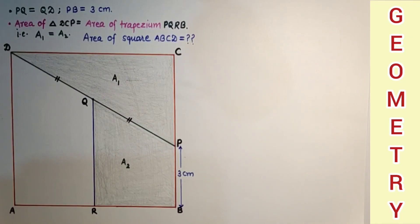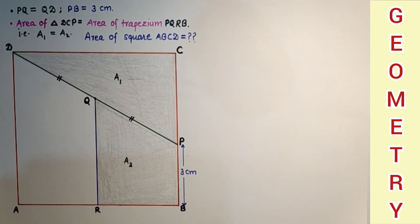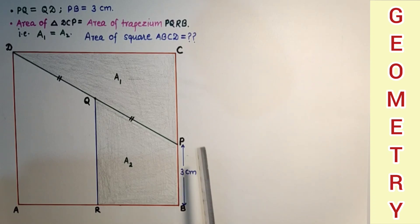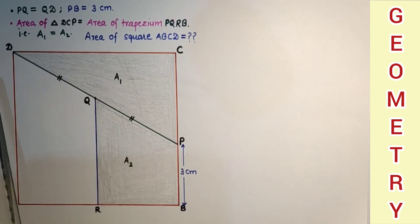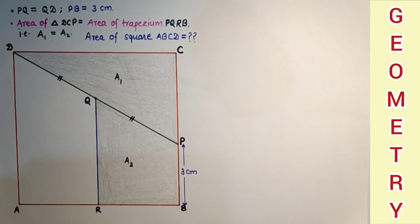Hello friends and respected viewers. Welcome once again. In today's video we are going to discuss this problem. ABCD is a square, P is a point such that BP is 3 cm. The diagram is not drawn to scale. The area of triangle DPC is equal to the area of trapezium PQRB. Q is the midpoint of hypotenuse DP, and we have to find the area of square ABCD. We will discuss this problem with two methods.